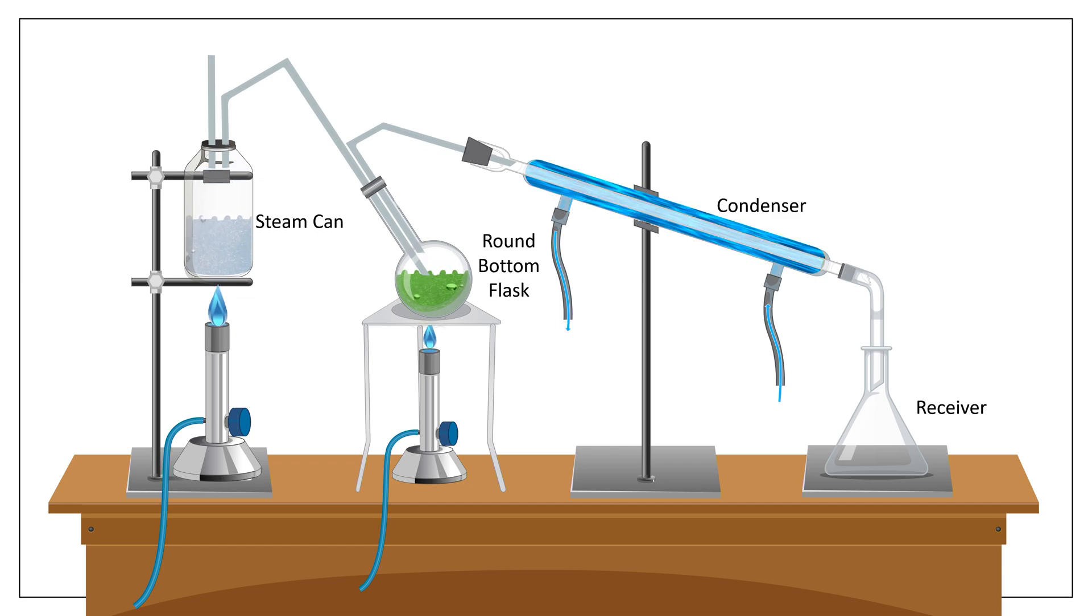When steam generated from the steam flask is passed through boiling mixture, the non-aqueous liquid heats up and steam carrying volatile fraction will pass into condenser where it gets cooled and collected in the receiver.